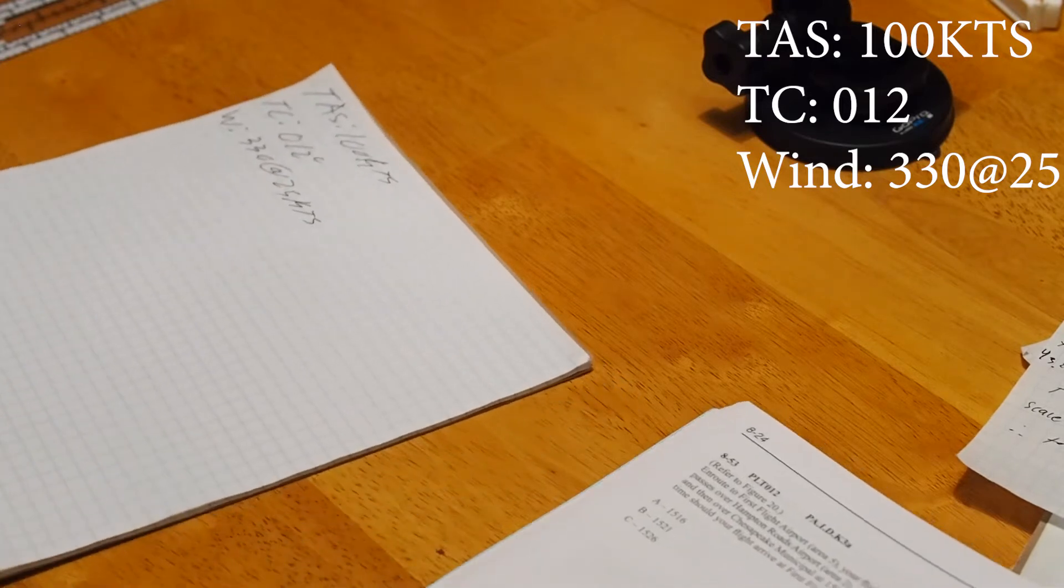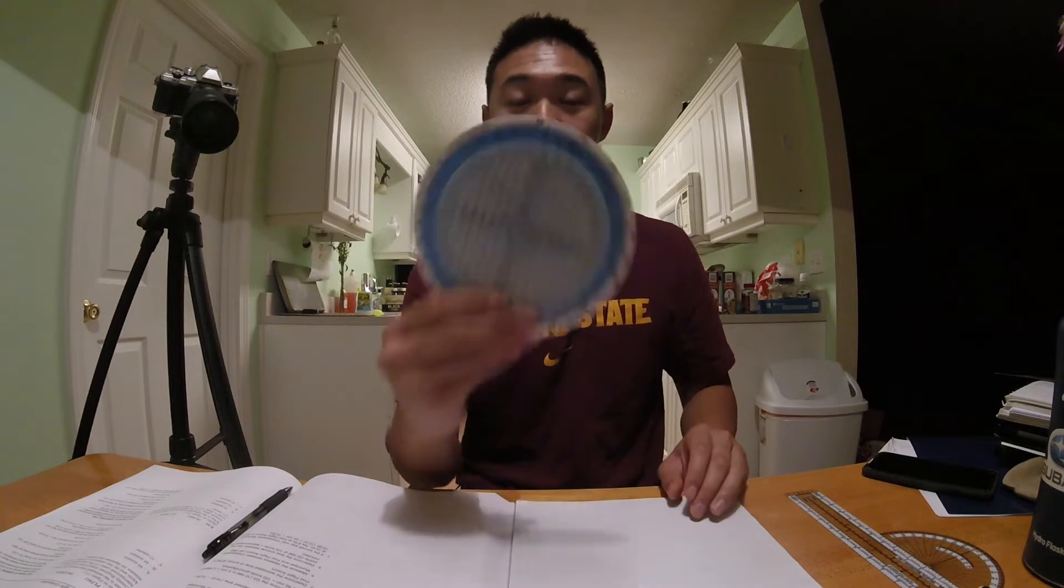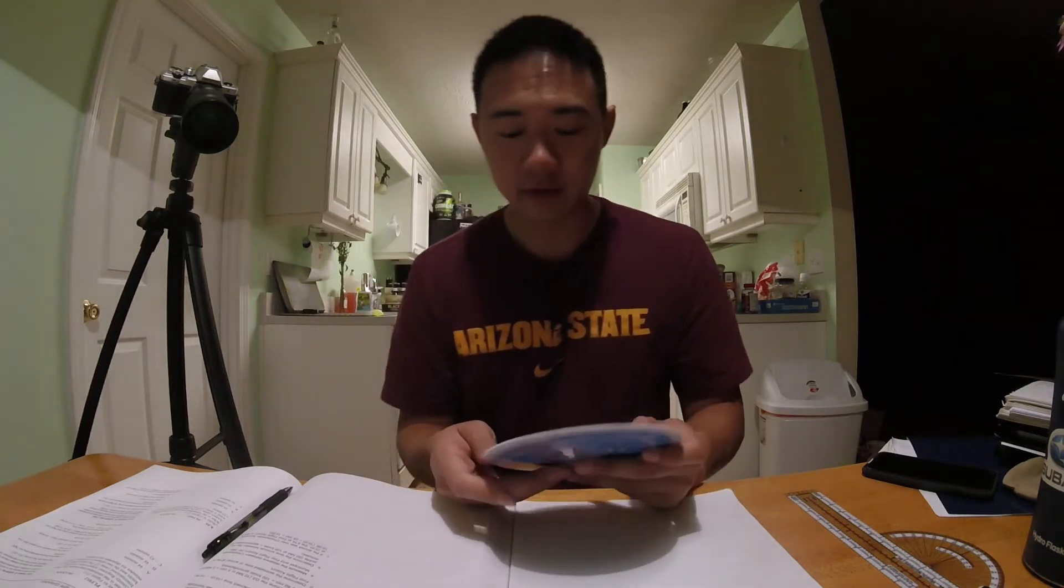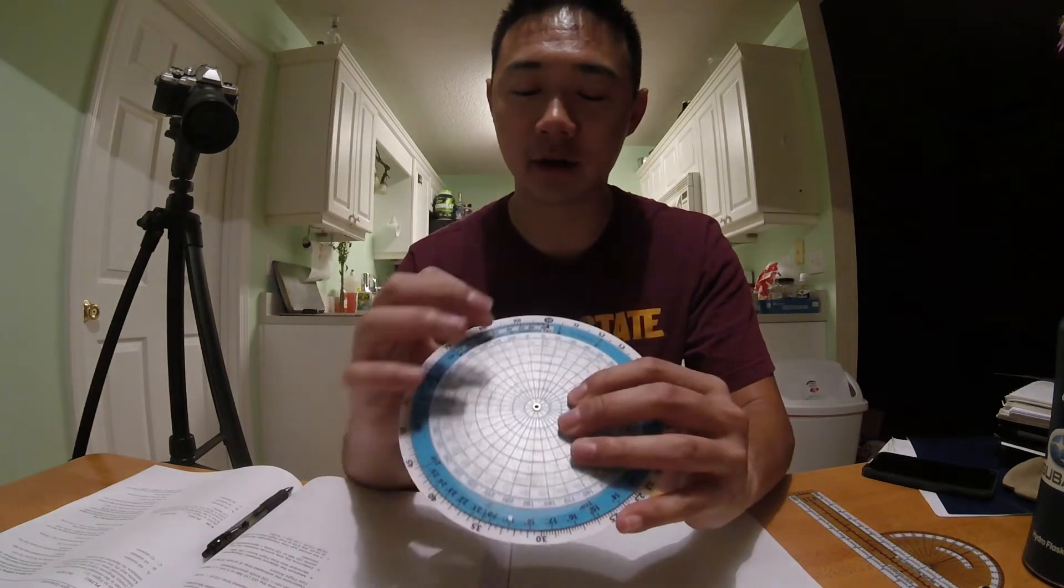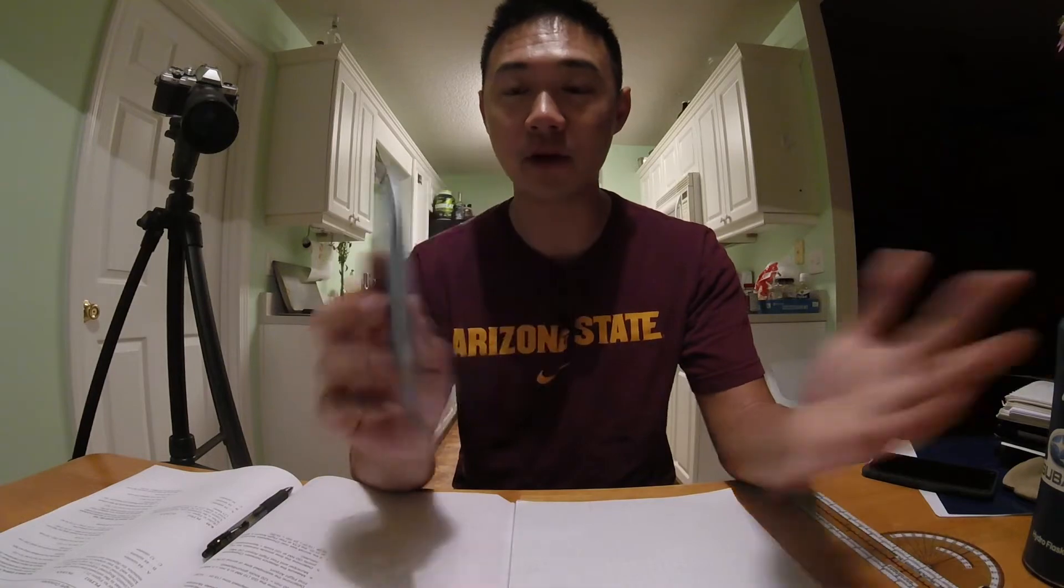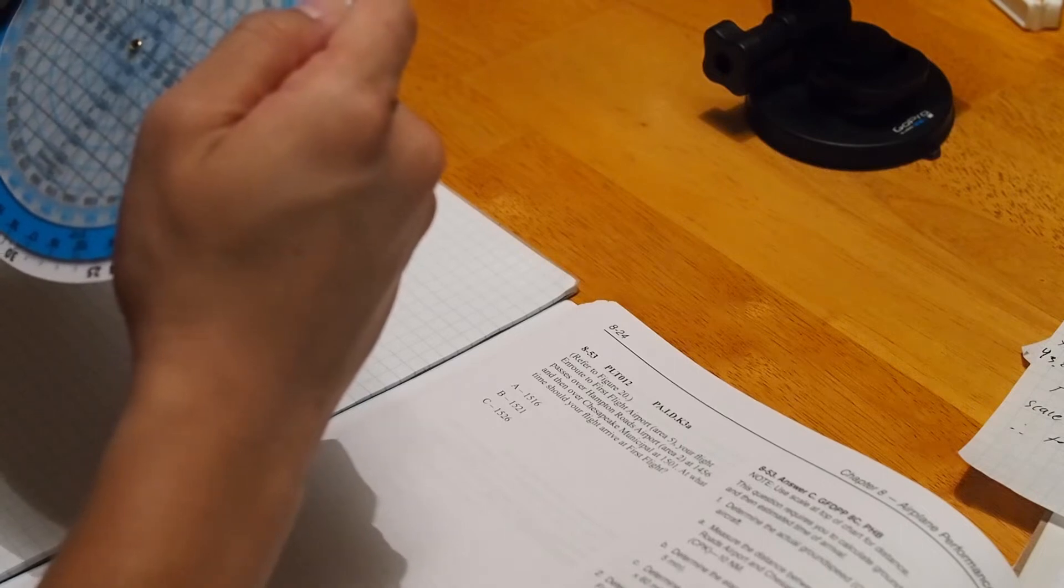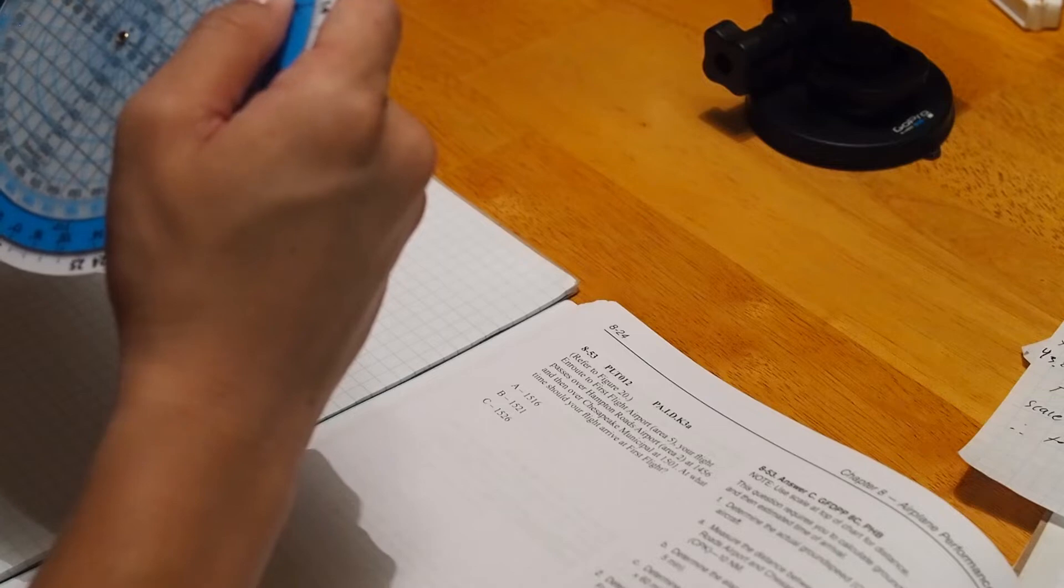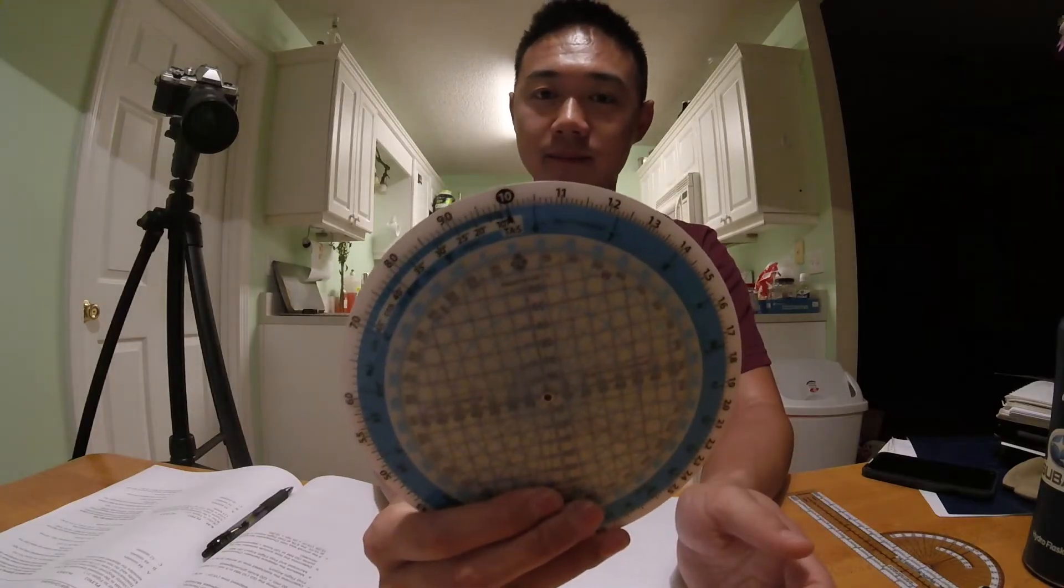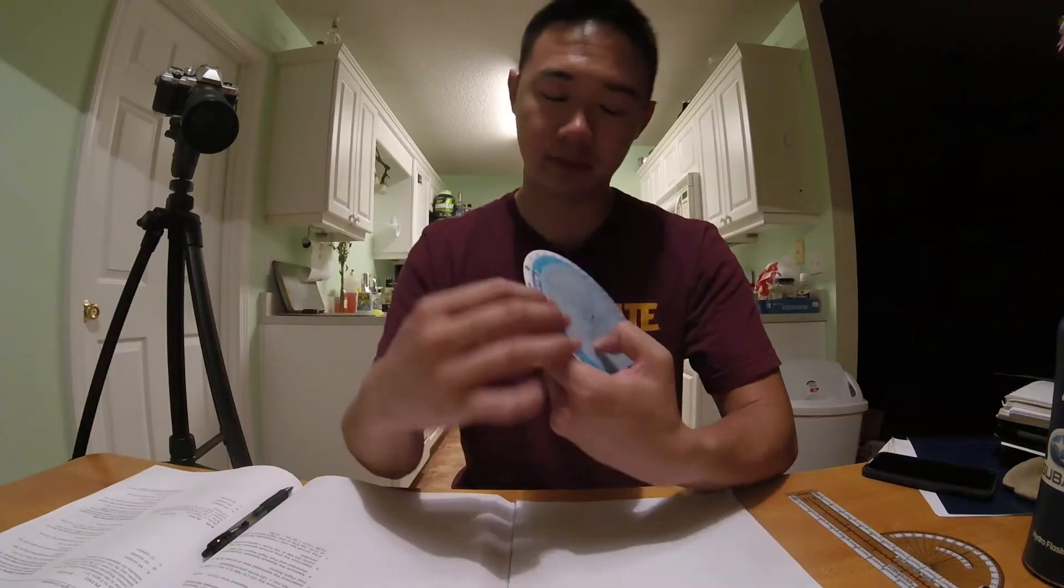Now we need to find the horizontal and vertical components of our wind. So what we're going to do is we're going to use this side of the flight computer. To do this, notice how we have a TAS and TC here. This stands for true airspeed and true course. Well, we have both of those. So we just take our measurements that we found. We have 100 knots for our true airspeed and then 012 for our true course.